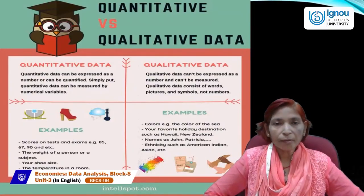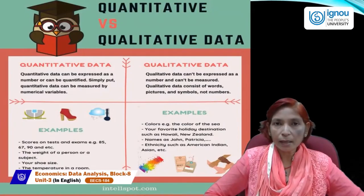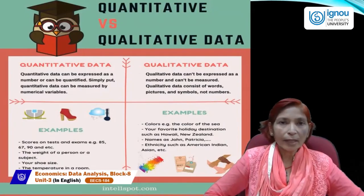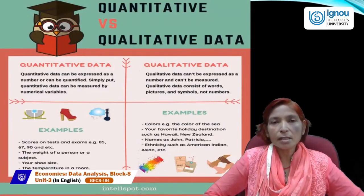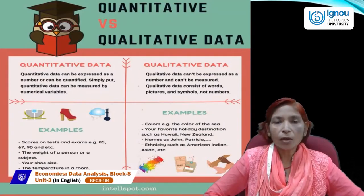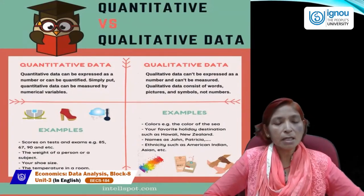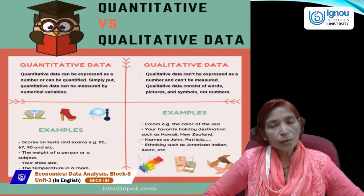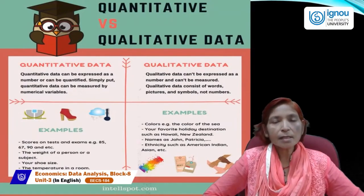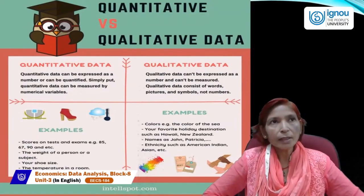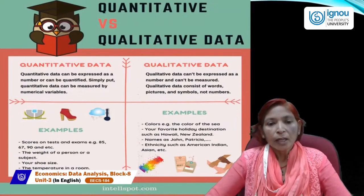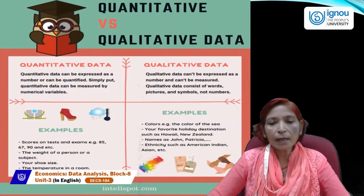The weight of a person can also be quantified — like 45 kg, 50 kg, 60 kg, or 70 kg. The temperature in a room can also be quantified. All these are examples of quantitative data. Examples of qualitative data include colors of the sea — it may be blue, red, or green.